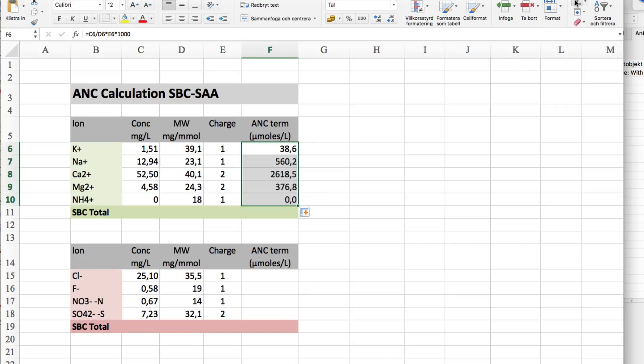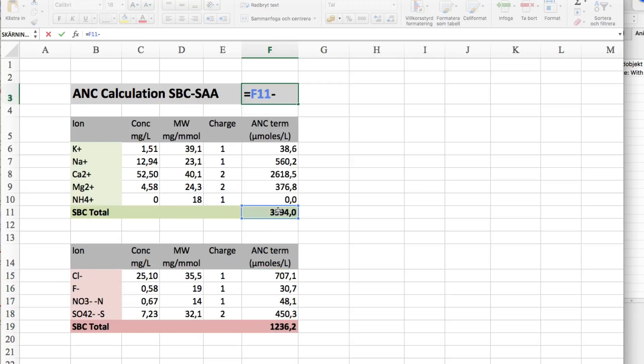We did this for all ions, and calculated the ANC as the difference between these sums. Now the resulting ANC was 2,358 micromoles per liter.